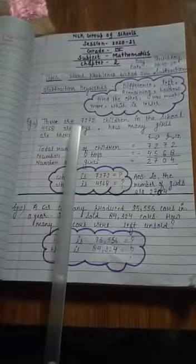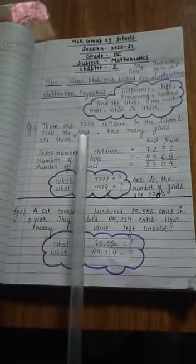So let's take an example children. Example number 1. There are 7,272 children in the school. 4,568 are boys. How many girls are there?